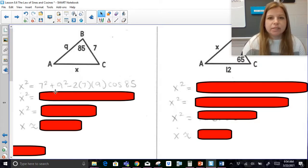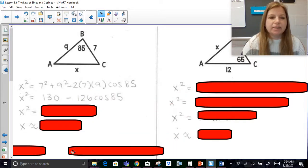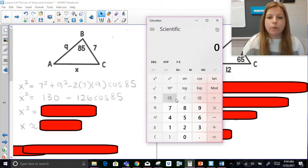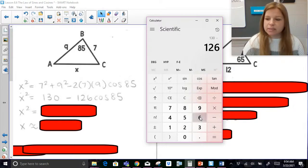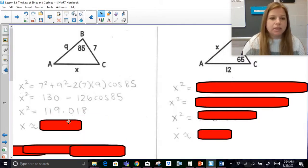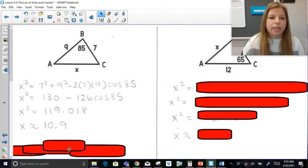So 7 squared is 49, 9 squared is 81, so 49 plus 81 is 130, minus, let's do 2 times 7 times 9. So 2 times 7 is 14, 14 times 9 is 126. And now I'm going to type this into my calculator. Again, I'm going to use the calculator that's on the laptop or what would be on your phone. So 130 minus 126 times, so I need to do cosine 85. So I'm going to type in 85 cosine, press enter, and I get 119.018. I need to then take the square root, so of course I'm going to use my square root button, and I get about 10.9.